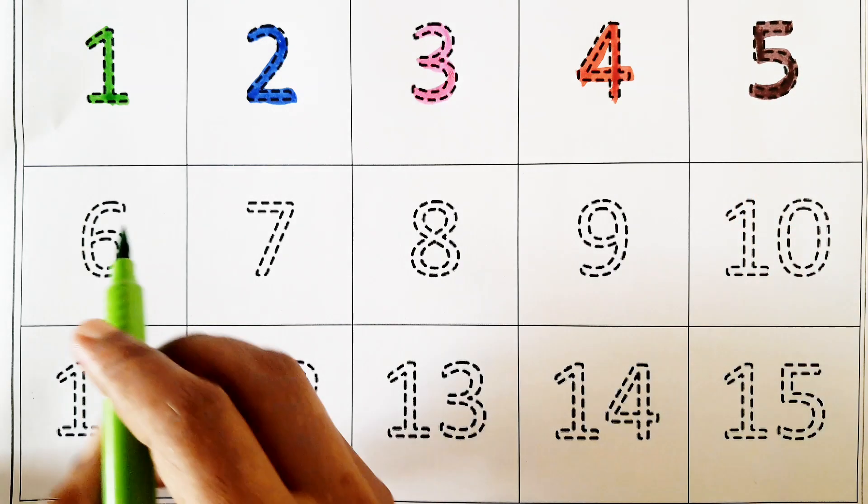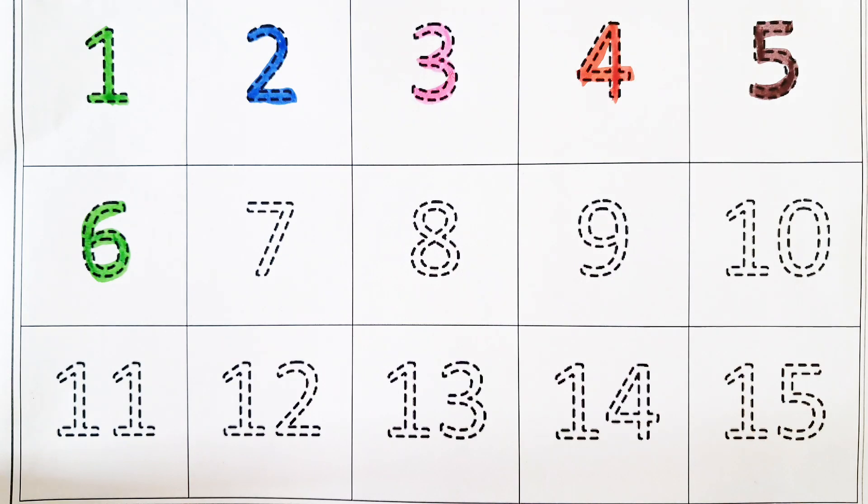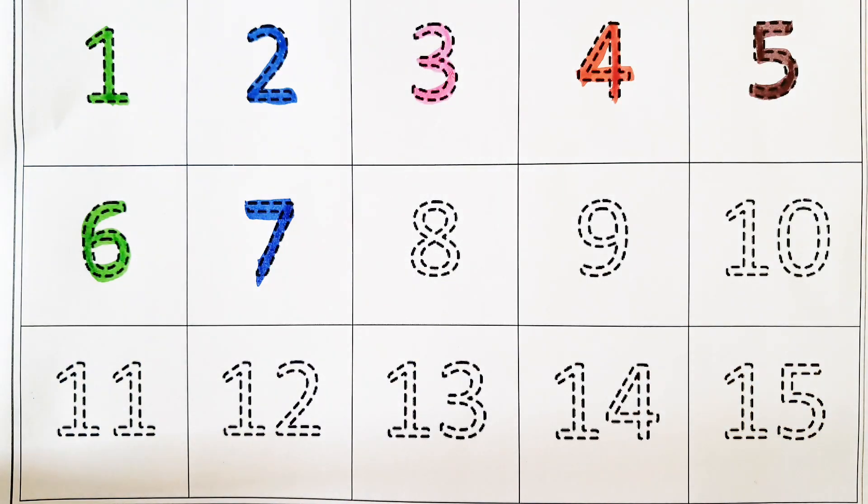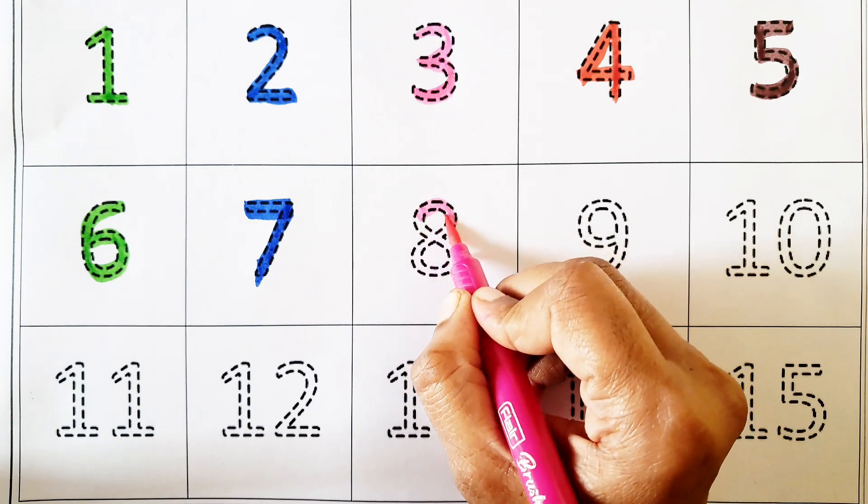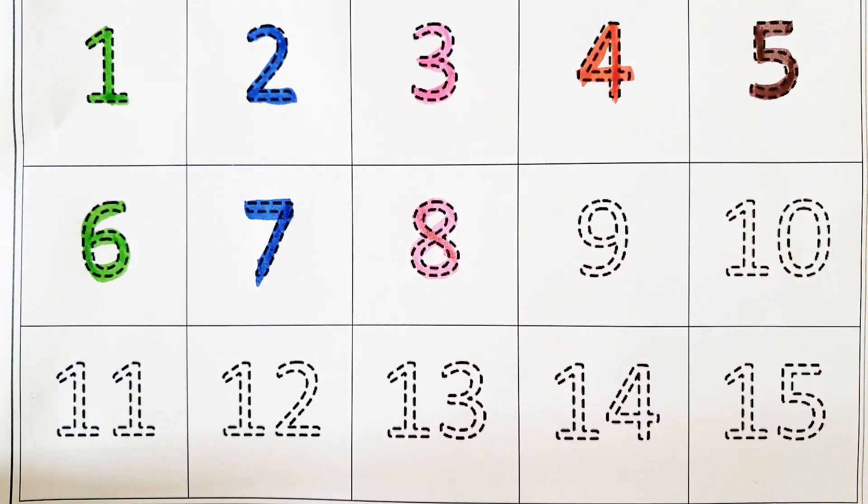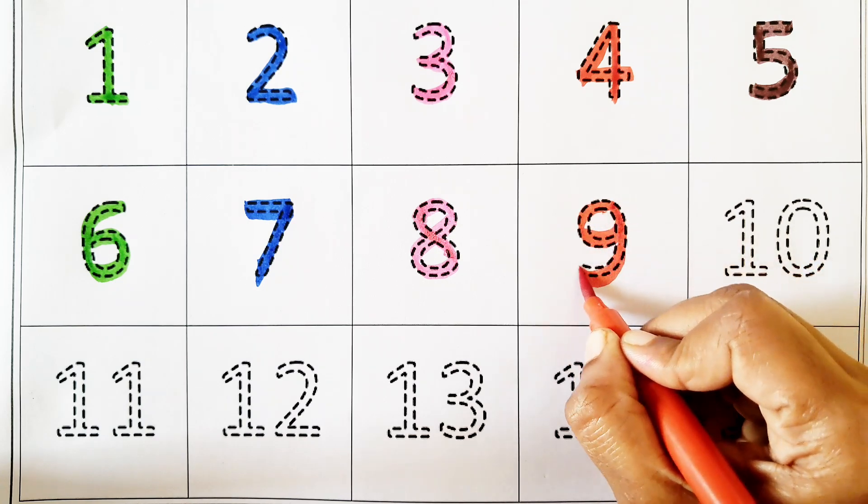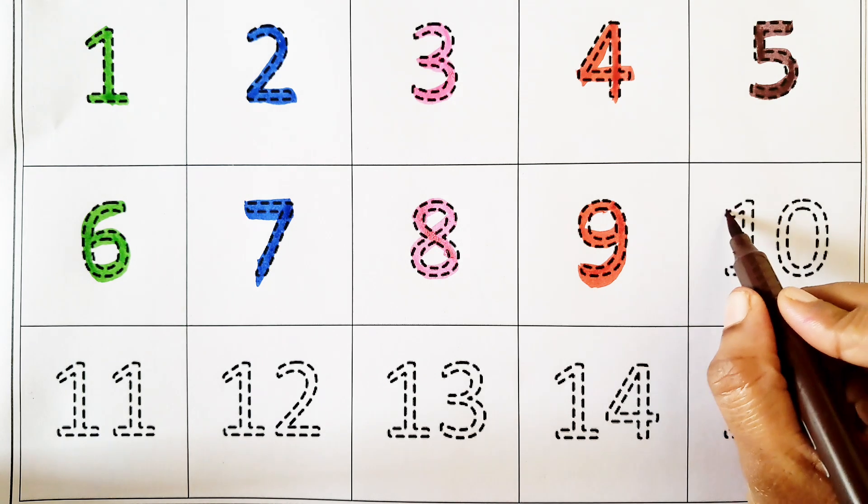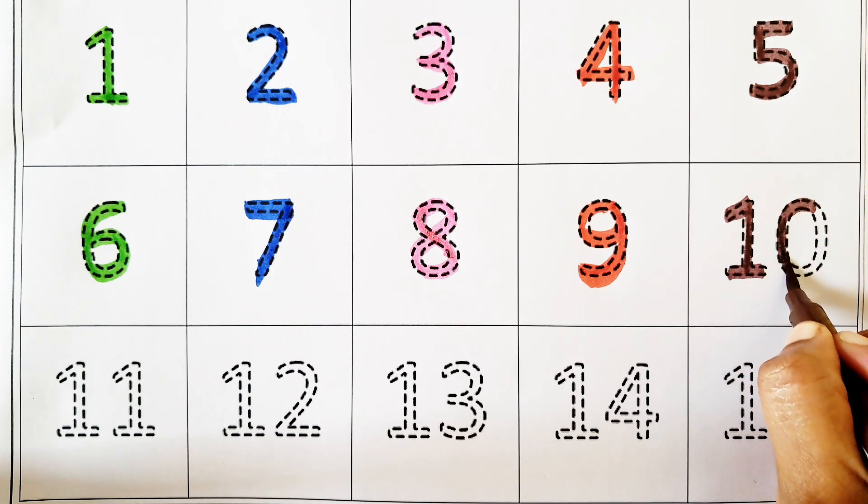Next number 6, six, S-I-X. Next number 7, seven, S-E-V-E-N. Next number 8, eight, E-I-G-H-T. Next number 9, nine, N-I-N-E. Next number 10, ten, T-E-N.